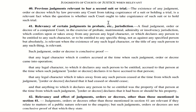Section 41 — relevancy of certain judgments in probate or similar jurisdiction. Imagine a dispute over property between two brothers. The court gives a final judgment saying the first brother is the absolute owner of the property. That final judgment is conclusive proof and is relevant with respect to such legal character. Importantly, the judgment must come from a competent court — a court without jurisdiction cannot give such an order.